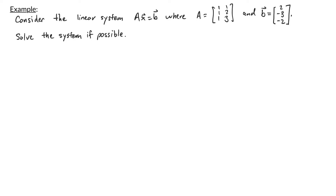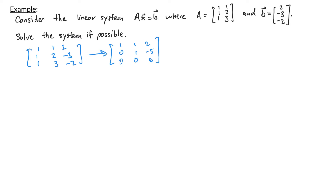Let's now look at an example. We have the linear system A times x equals B, where A is the matrix [[1,1],[1,2],[1,3]] and B is the vector [2, -3, -2]. We're asked to solve this system if possible. To check, I form the augmented matrix [A|B] = [[1,1,2],[1,2,-3],[1,3,-2]] and row reduce it. This row reduces to [[1,1,2],[0,1,-5],[0,0,6]]. The last row corresponds to the equation 0 = 6, which is never true. So the system is inconsistent and has no solutions.